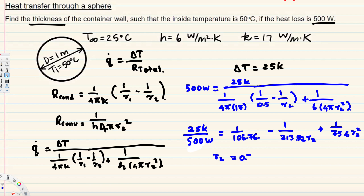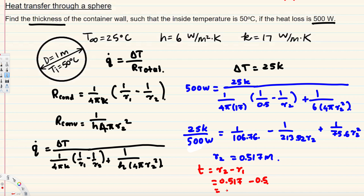Solving for r2, we get r2 equals 0.517 meters. Thickness equals r2 minus r1: 0.517 minus 0.5 equals 0.017 meters, which is equivalent to 17 millimeters.